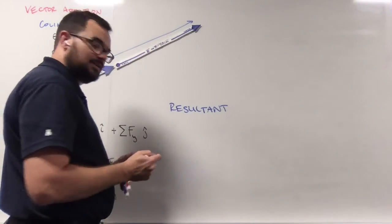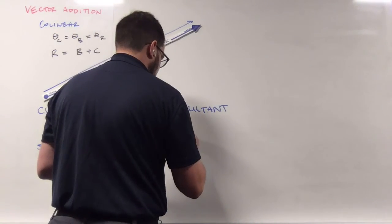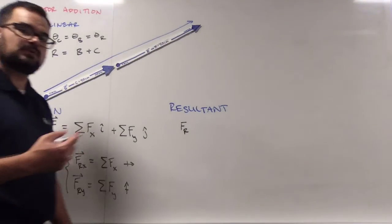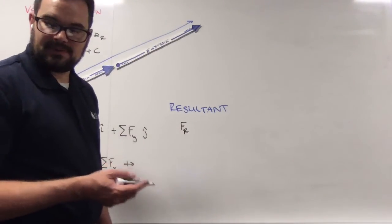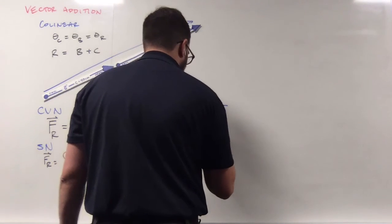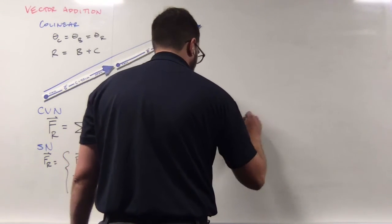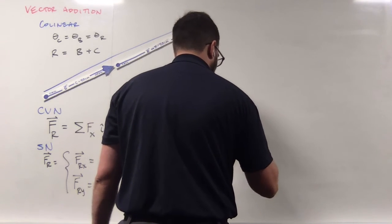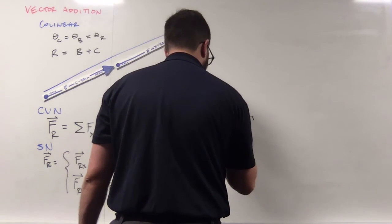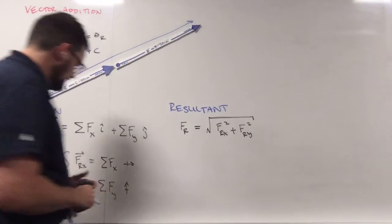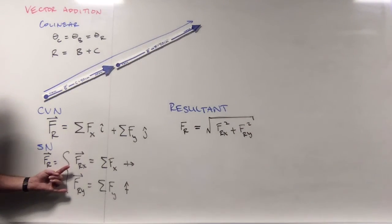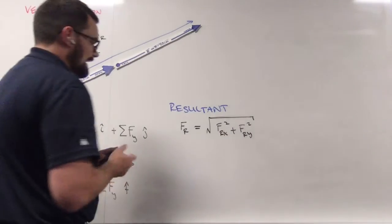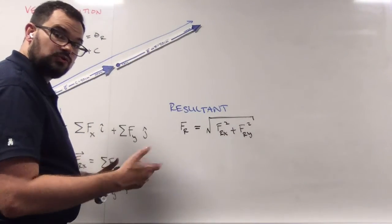Where we might want to know the magnitude of the resultant force. If we want to know the magnitude, we're going to use our Pythagorean theorem. So the magnitude is equal to the square root, F_Rx squared plus F_Ry squared, which we'll remember that F_Rx and F_Ry are simply the sum of the forces in the x and sum of the forces in the y. Because now we have a resultant that's its own triangle.